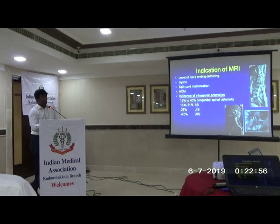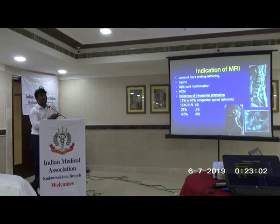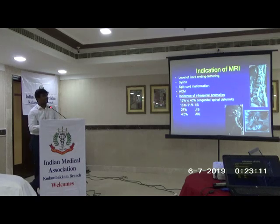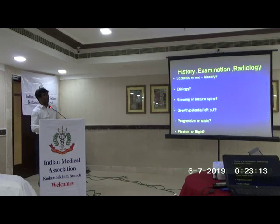MRI is also important because many patients have intraspinal anomalies. If there is pain or if you are planning to operate, do an MRI first. Without correcting the intraspinal anomaly, if you proceed to operate, the patient will end up with paraplegia however good the correction. So MRI is mandatory.